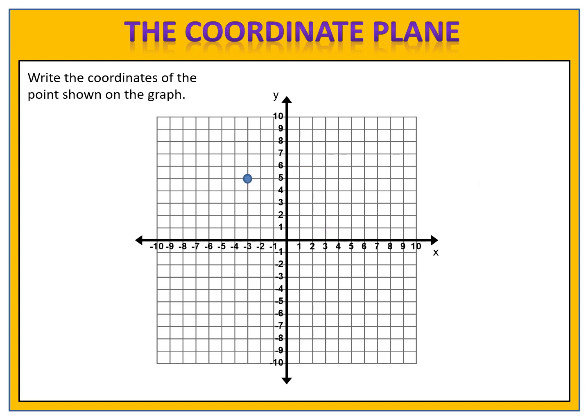Points can be in any of the quadrants. Here we have a point in the second quadrant. Can you write the coordinates of this point? Pause the video and come back when you've finished. We begin by looking at the x-axis — we're above the negative 3. We then look at the y-axis and we're at the 5. X is negative 3, y is 5, so we have the point negative 3 comma 5.